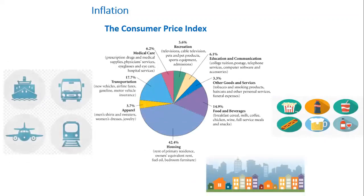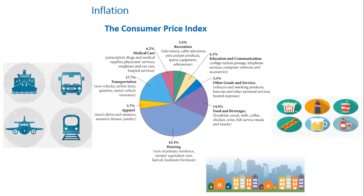The CPI market basket shows how a typical consumer divides his or her money among various goods and services. Most of consumers' money goes toward housing, transportation, and food and beverage. As you can see in the graph in front of you, housing represents the major component where people spend their money, followed by transportation and food and beverage.